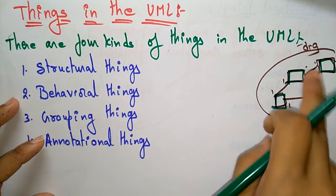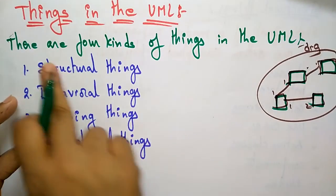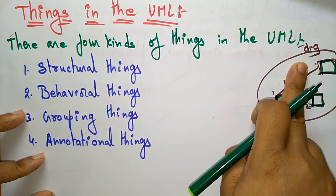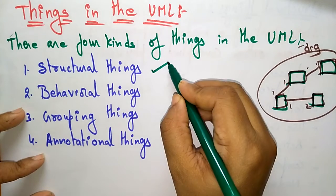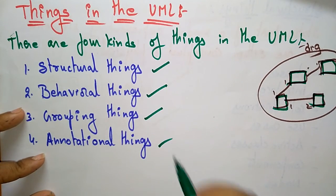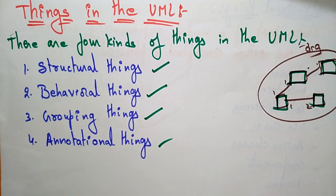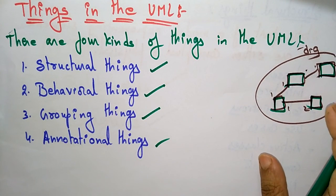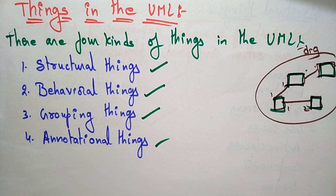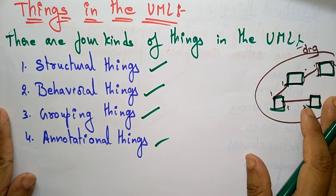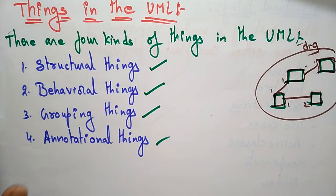These things in the UML are of four kinds: structural things, behavioral things, grouping things, and annotational things. We will discuss what are the structural things, behavioral things, grouping things, and annotational things in the next video. Thank you.